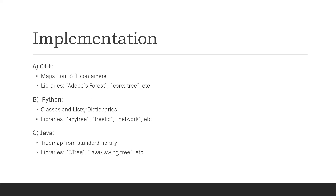Now let's discuss how we can implement a 2-3 tree in different programming languages like C++, Python, and Java. Since C++ doesn't have a standard library to implement a 2-3 tree, some functionalities and benefits can be achieved by using maps from STL containers, which are implemented using red-black trees. We also have libraries like Adolfs Forest in C++. Similarly, in Python there are no standard libraries, but 2-3 trees can be implemented using classes and lists or dictionaries, though the process can be complex and time-consuming. Libraries like AnyTree, Treelib, and NetVortex are available. For Java, tree maps from the standard library can be used as they are based on red-black trees, and libraries like B3 and JavaX Swing Tree can also implement 2-3 trees.